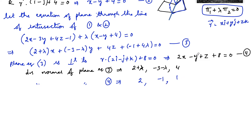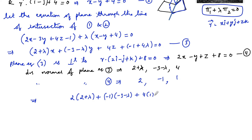Since the two planes are perpendicular, their normals are also perpendicular and hence their dot product is 0. So: 2(2 + λ) + (-1)(-3 - λ) + 4(1) = 0. On simplifying: 4 + 2λ + 3 + λ + 4 = 0.